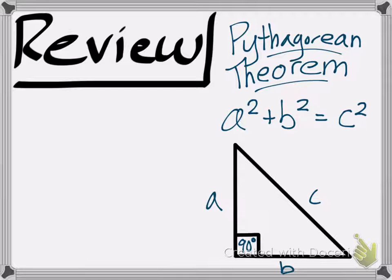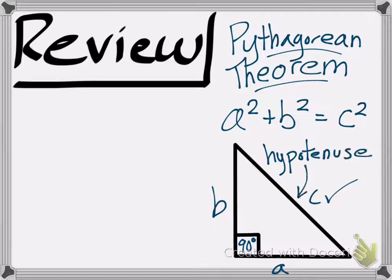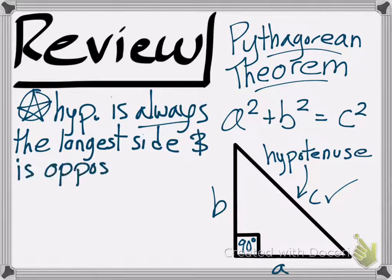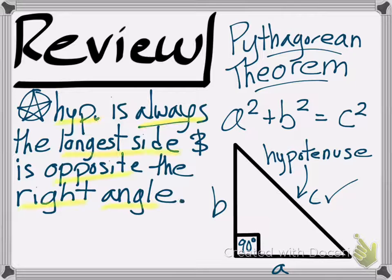One thing you need to be aware of is that the values of a and b do not have to be in the positions that you see them in right now. You could also have b and a just like that. Sides a and b are interchangeable, but side c has a special name. It is called the hypotenuse. It is always the diagonal, but it is always opposite the 90 degree angle. So these are the two things you need to know.